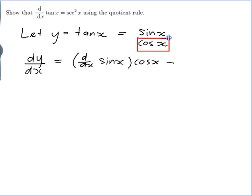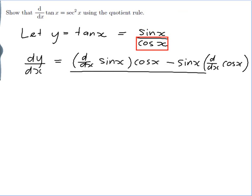minus the top times the derivative of the bottom all over the bottom squared.